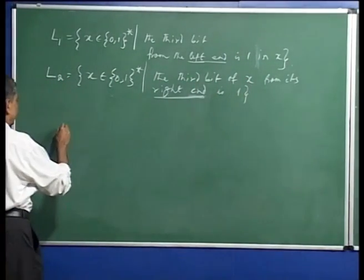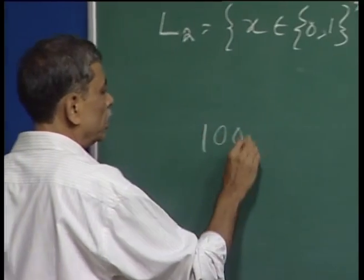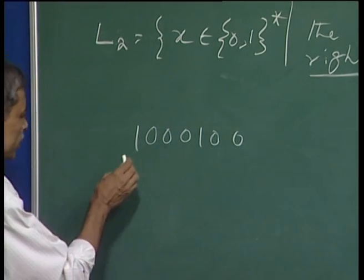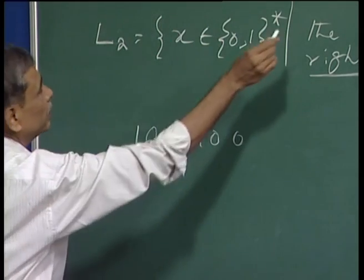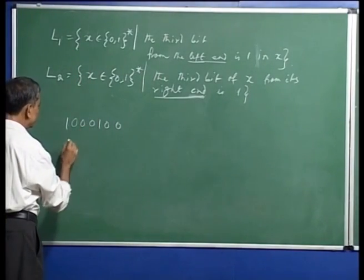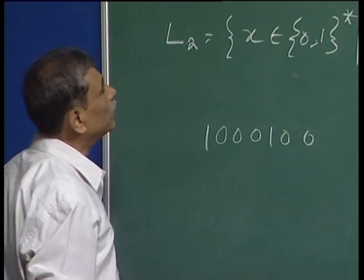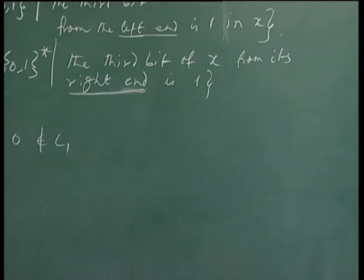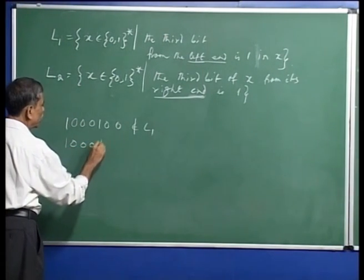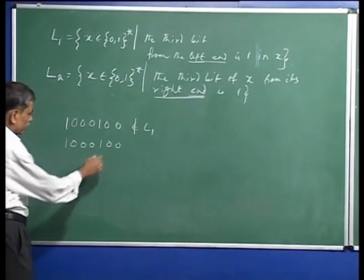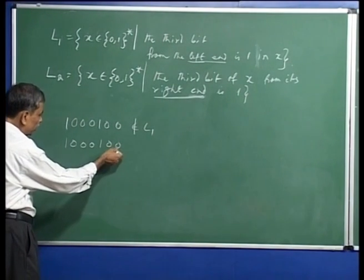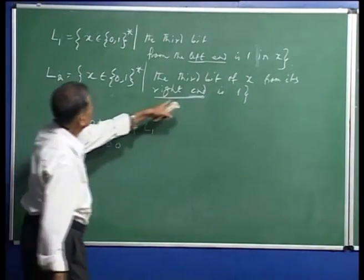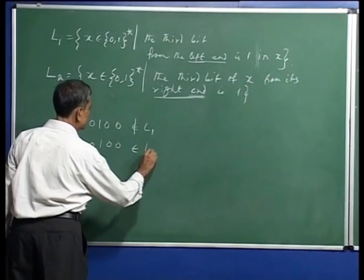For example, the string 0 0 0 1 0 0: is this in L1? It is not, because the third bit from the left end is 0, not 1. On the other hand, the string 0 0 0 1 0 0, looking from the right end, the third bit is 1. So this string is actually in L2.